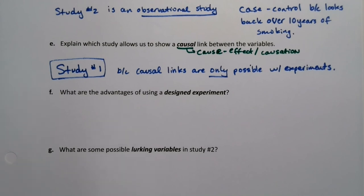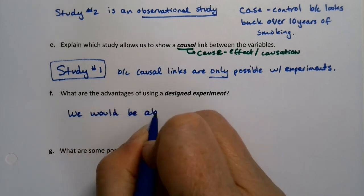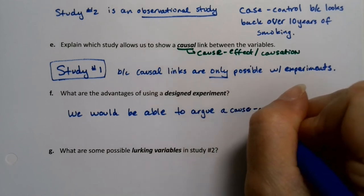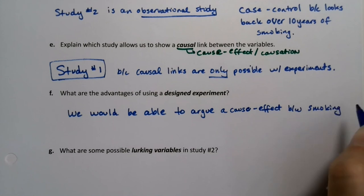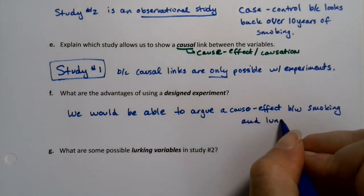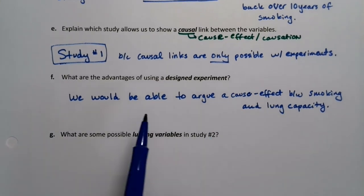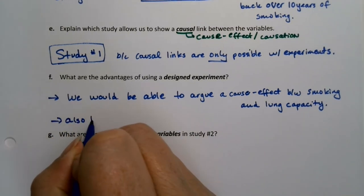What would be the advantages of using a designed experiment? It wouldn't allow the cigarette companies to hide so much — we would be able to argue a causal link, a cause-and-effect relationship, between smoking and lung capacity. The smoking companies wouldn't be able to say their smoking doesn't affect lung capacity. That's the big advantage of a designed experiment. It also has randomization to help avoid bias.